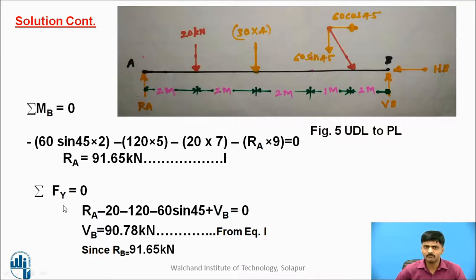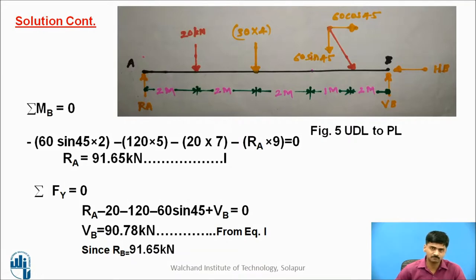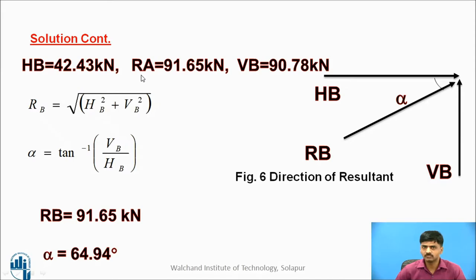Next, apply summation Fy = 0. All vertical upward forces: RA + VB, equated against all vertical downward forces: 20 + 120 + 60 sin 45 = 0. Therefore VB = 90.78 kilonewtons. To find the resultant RB, use HB and VB with the vector formula. The angle alpha with respect to horizontal is 64.94 degrees. From this you can easily identify all remaining values.